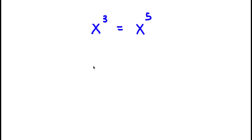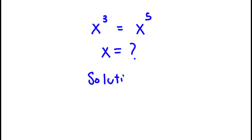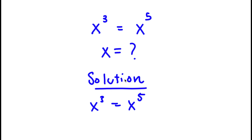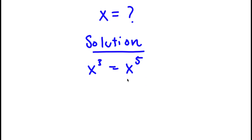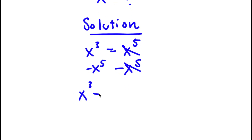In this problem I have x³ = x⁵, and I want to find the value of x. For my solution, I start with x³ = x⁵. I'm going to subtract x⁵ from one side, so now I'm left with x³ − x⁵ = 0.